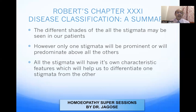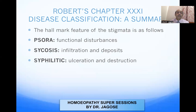All the stigmata have different types of pain, their onset, their duration, the discharges, the odor from the discharges, and their peculiar modalities. The hallmark features are as follows: Psora — functional disturbances; Sycosis — infiltration and deposit; Syphilitic — ulceration and destruction. In Psora, you get functional disturbances; in Sycosis, infiltration, deposits, stasis, edema; in Syphilitic, ulceration, destruction, and degeneration.